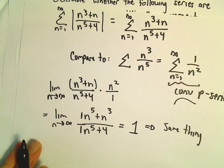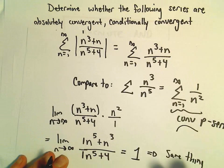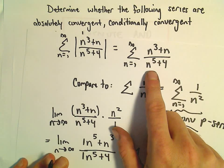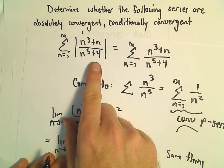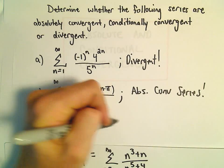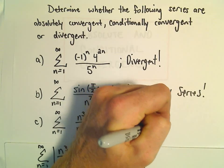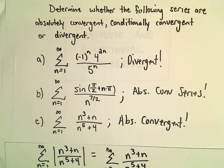And, well, since our original series that we're comparing it to is a convergent p-series, that means our original series is also convergent. But since we put an absolute value, and again, it doesn't really change it, but that would mean it's also absolutely convergent.